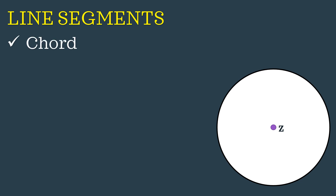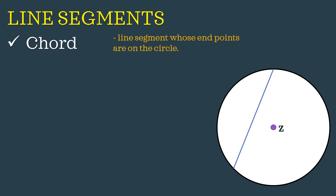Starting from first is called a chord. A chord is a line segment whose endpoints are on the circle. So in this figure, the endpoints are on the circle. We also have other chords shown. The endpoints of the lines drawn are on the circle. Since a chord is a line segment, we use the symbol for line segment. Here we have line segment AC, line segment BE, and also line segment CD.